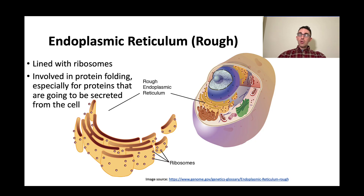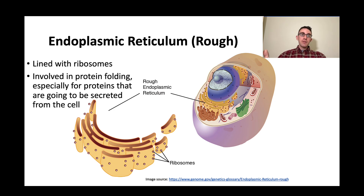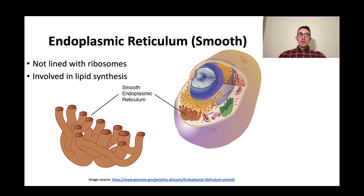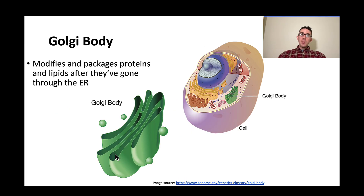Another membrane-bound organelle is the rough endoplasmic reticulum. It's lined with ribosomes, which is why it's called rough — that's what differentiates it from the smooth endoplasmic reticulum. It's involved in protein processing, including protein folding. The smooth endoplasmic reticulum is similar but not lined with ribosomes — that's why it's called smooth — and it's involved in lipid synthesis and some other things. The Golgi body is another membrane-bound organelle; it modifies and packages proteins and lipids after they've gone through the endoplasmic reticulum.